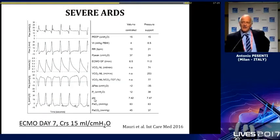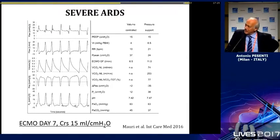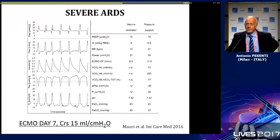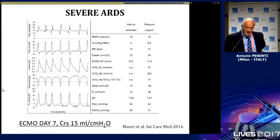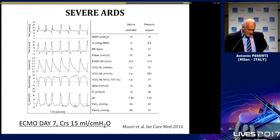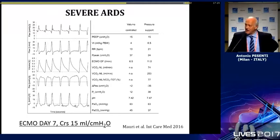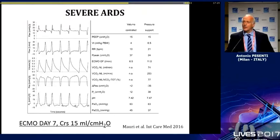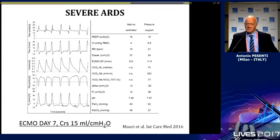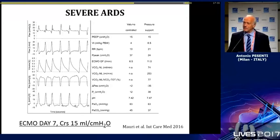In a severe ARDS patient — still on day seven, one of those patients Alain Combe was referring to — we stopped paralysis and he started to breathe. He was still very sick, and the esophageal pressure swing was more than 30 centimeters of water; transpulmonary pressure was in the forties, made entirely by his own muscles. We have called this patient self-inflicted lung injury (P-SILI): a strong effort during spontaneous breathing can damage the lung, and unfortunately we cannot control it by controlling blood gases.